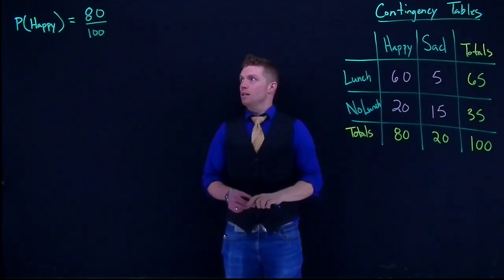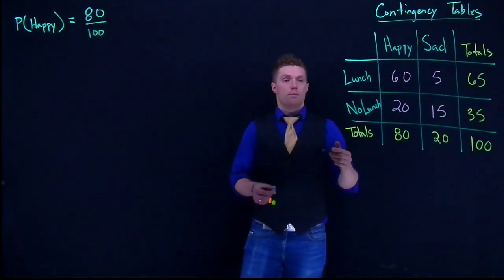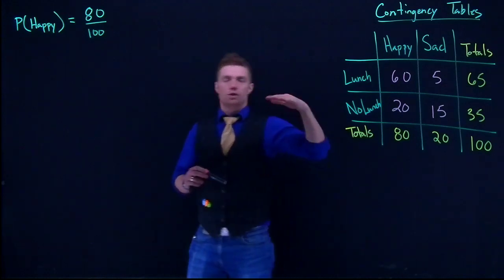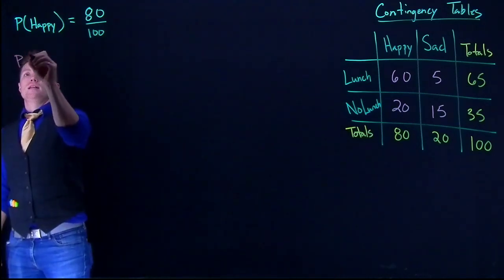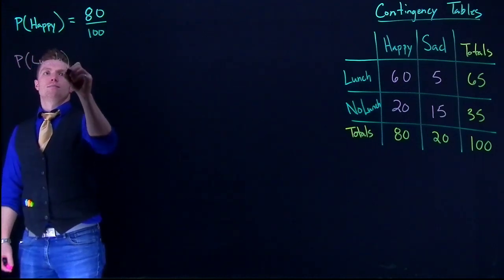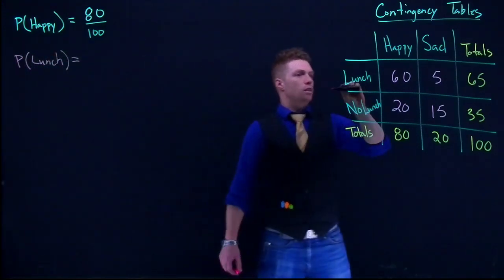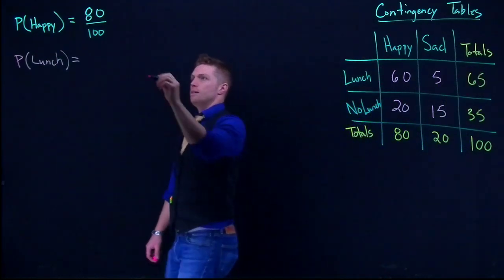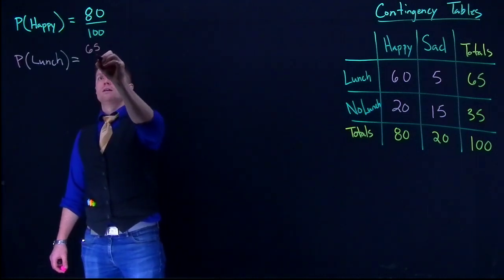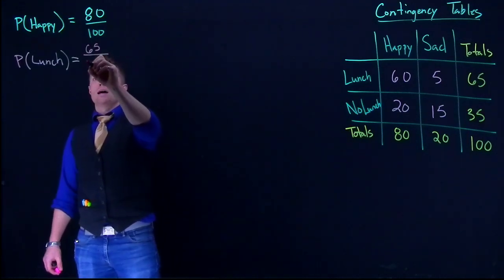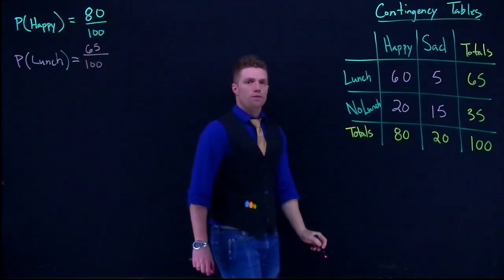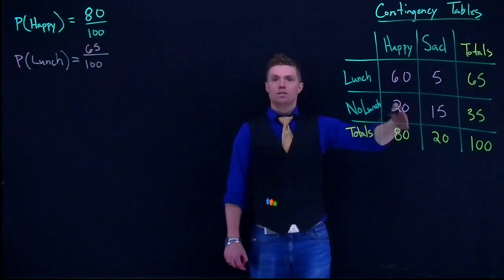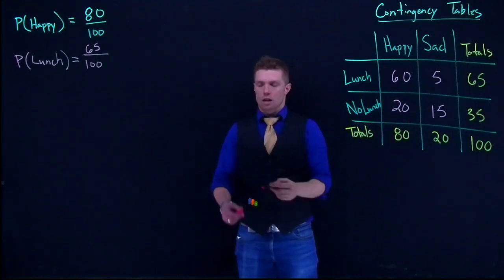We can look at other probabilities like the probability of being sad or the probability of a randomly selected person having eaten lunch. Let's do that one so we have both directions. The probability of lunch is equal to: 65 people identified as having had lunch, divided by the total of 100. So 65 out of 100. This is a handy and easy way to organize our data and answer these questions.